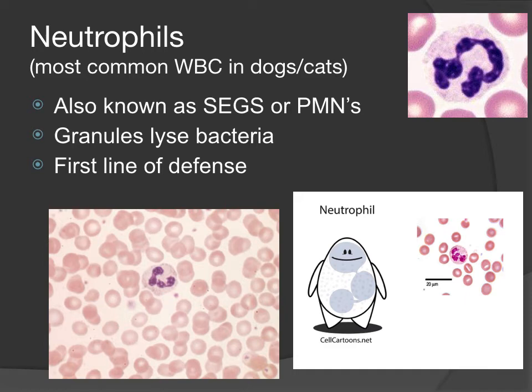Neutrophils are the most common cell in the dog and the cat. We also call these cells segs for segmented nuclei, or PMNs for polymorphic nucleus, meaning the nucleus has lots of different shapes. The granules inside the neutrophil are responsible for helping to break down or lyse bacteria. These neutrophils are our first line of defense — they can tell normal versus abnormal cells most of the time.